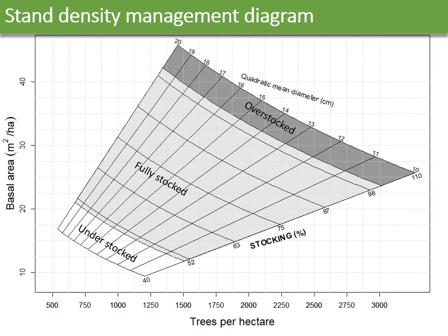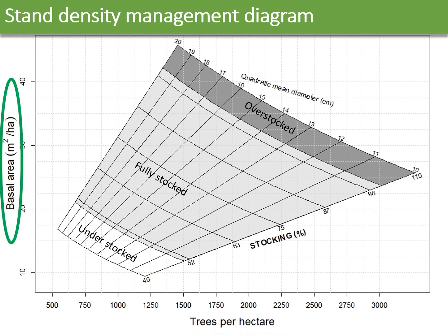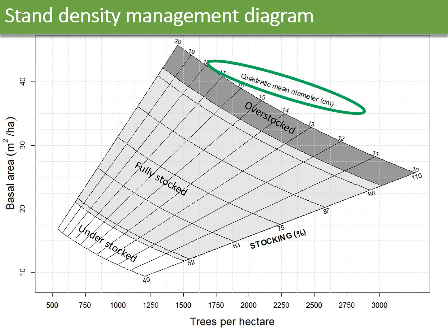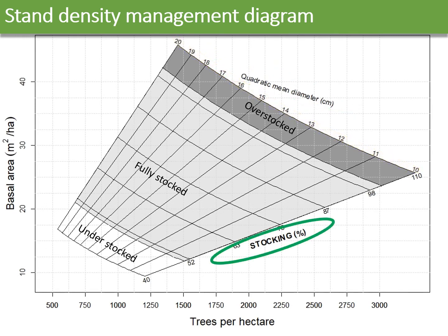Let's see the elements that make a Stand Density Management Diagram. It is a four-dimensional graph with the number of trees per hectare on the x-axis and basal area per hectare on the y-axis. In addition, quadratic mean diameter is represented by the inclined vertical lines and the level of stocking is represented by the inclined horizontal lines.